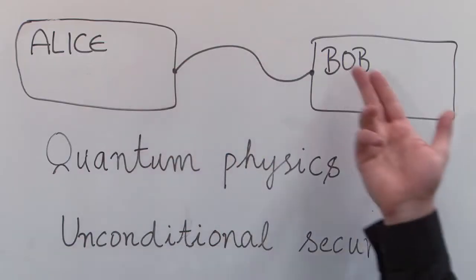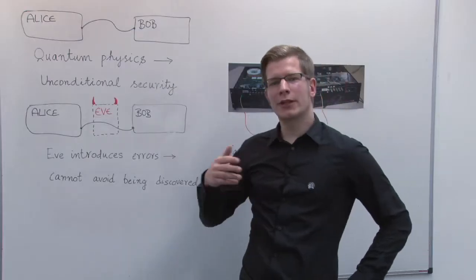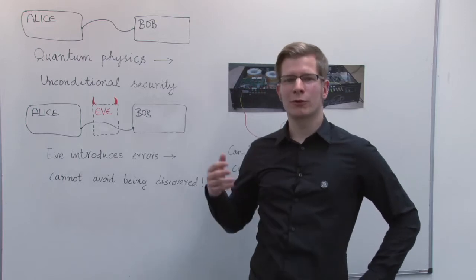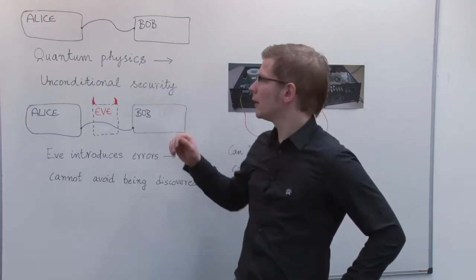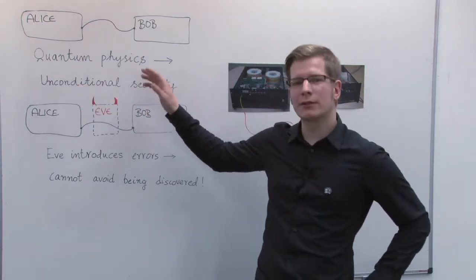Let's say that two parties, Alice and Bob, want to communicate. Then, in contrast to classical cryptography, quantum cryptography offers them a method with unconditional security, in principle.